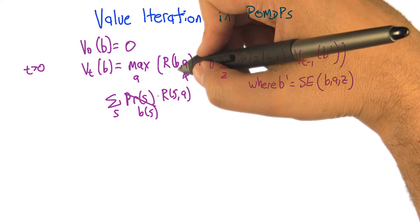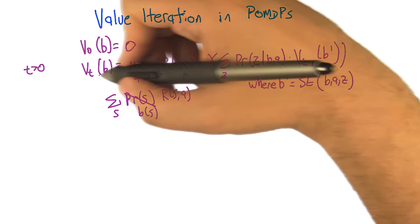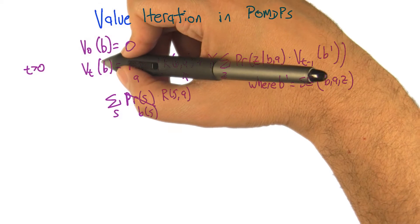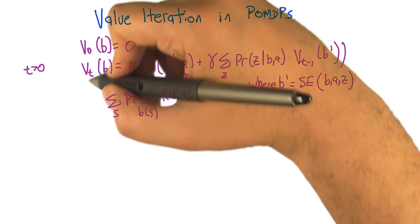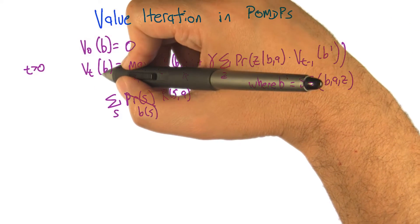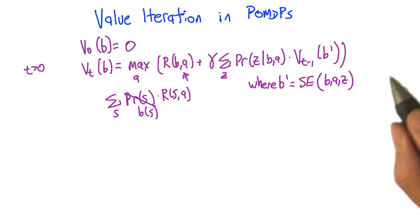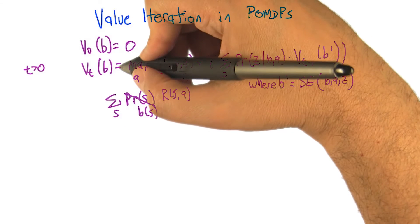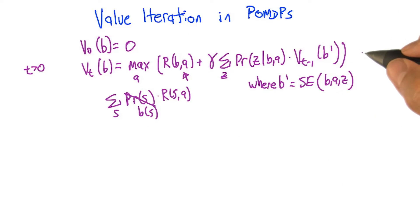And so, now that we've got that out of the way, the scary thing here is this function v, this value function, is defined over an infinite set of belief states, these vectors of probabilities over states. So we're not going to let that scare us quite yet, but it is something we have to keep in mind. Otherwise, we could just implement this directly.